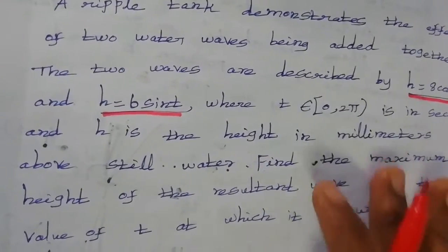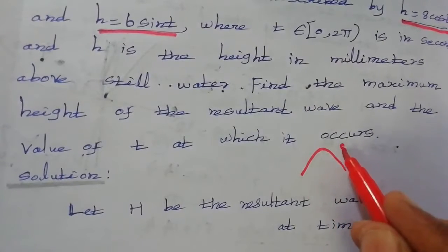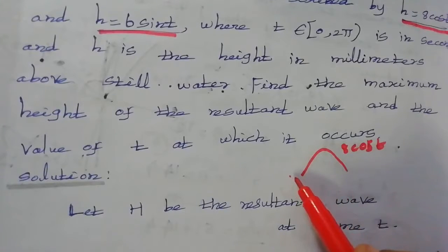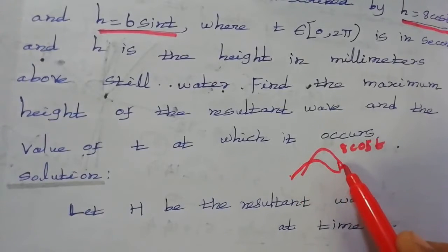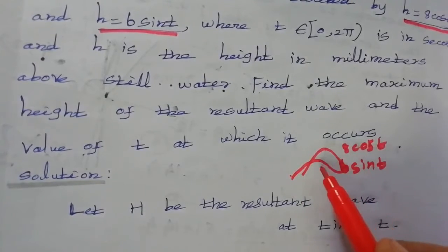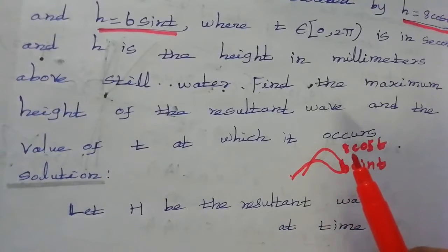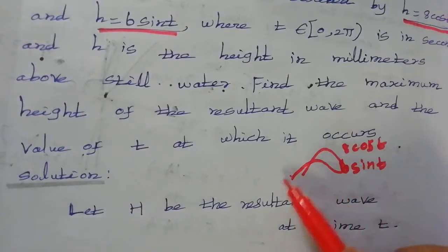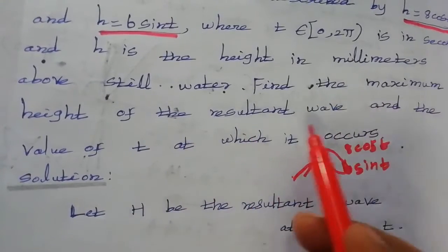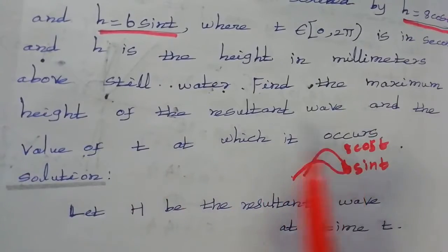There are two waves. One wave has height maximum height 8 cos t, another wave has height equal to 6 sin t. Add together these two waves, so the maximum height of the resultant wave and the value of t at which it occurs.